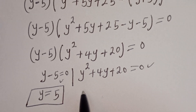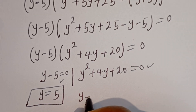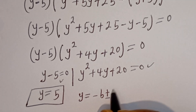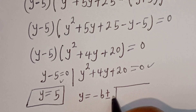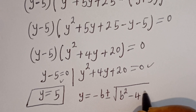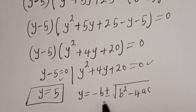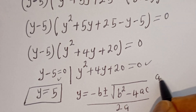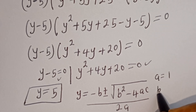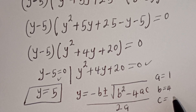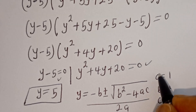The quadratic general formula gives us y equal to minus b, plus or minus square root of b squared minus 4ac, divided by 2a. Here a equals 1, b equals 4, and c equals 20.